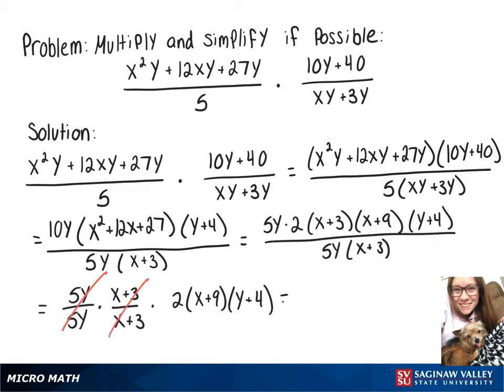And that leaves us with 2 times x plus 9 times y plus 4, which is one way that you can write the answer. Or if you wanted to multiply it out, then we'd end up with 2xy plus 8x plus 18y plus 72.